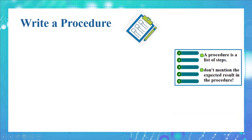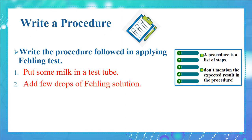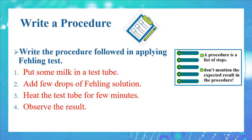Note that a procedure is a step-by-step guide to direct the reader through a task, so a written procedure is a list of steps without mentioning the result. Write the procedure followed in applying the Fehling test: put some milk in a test tube, add a few drops of Fehling solution, heat the test tube for a few minutes, and observe the result.